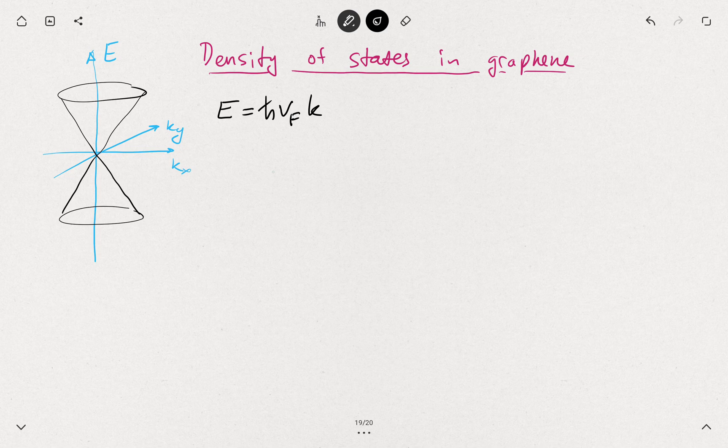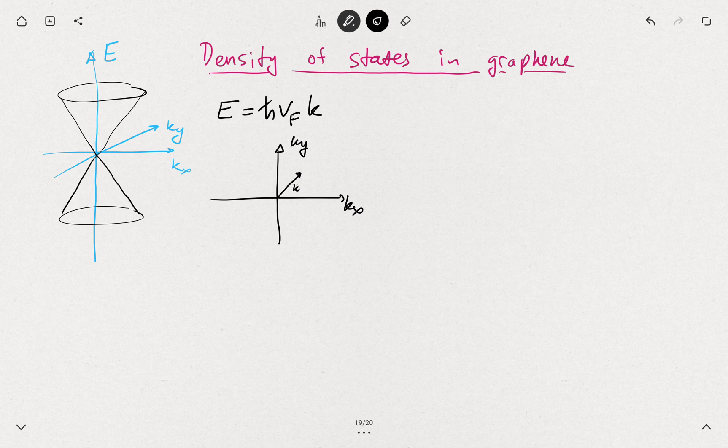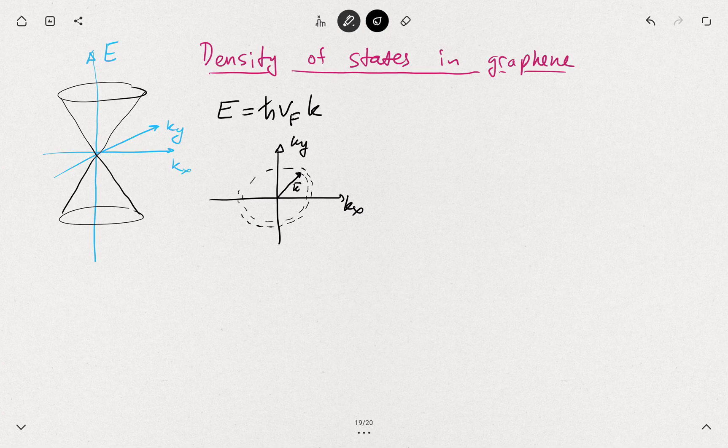We then use the same trick, so we have kx, ky, and we consider the states at wave vector k. We take a narrow ribbon of the k states and then we integrate the number of states in this ribbon here.